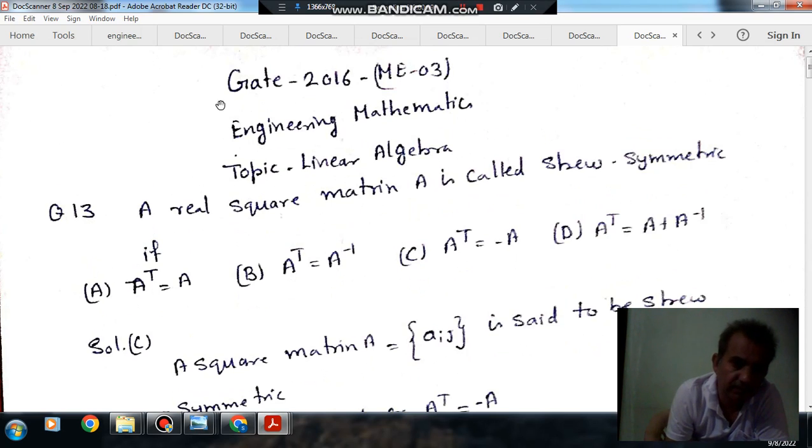Question number 13 from Gate 2016 M03. A real square matrix A is called skew symmetric if option A, A transpose is equal to A; option B, A transpose is equal to A inverse;